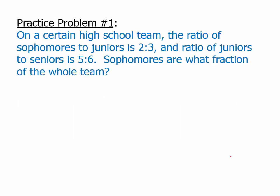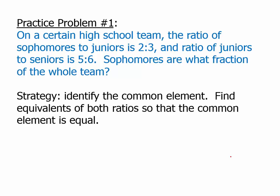So, here's a practice problem. Pause the video, work on this on your own, and then we'll talk about how to solve this. Okay, so notice we're given two different ratios, and all we're being asked is fraction information. In other words, there's no concern here about total number, how many sophomores, how many juniors. We're only concerned with fractional information, because that means we can stick entirely with ratios. So, it makes sense to use the first strategy. We're just going to identify the common element, and find equivalent ratios so the common element is equal.